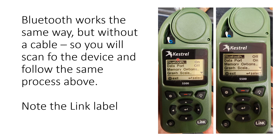If you're going to use Bluetooth, you do the same thing, but instead of data port you'll have a Bluetooth option. If you turn Bluetooth off, your data port will turn on. If you turn Bluetooth on, your data port will turn off — you can only have one on at a time, or both off. So if you're using a link system and want to use the data port, you have to tell it that, otherwise it's going to try to send everything by Bluetooth. If it has a link symbol on it, that means it can handle Bluetooth.